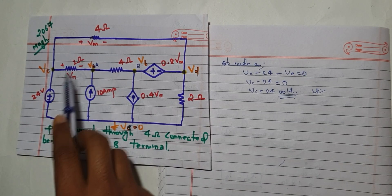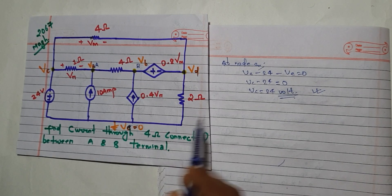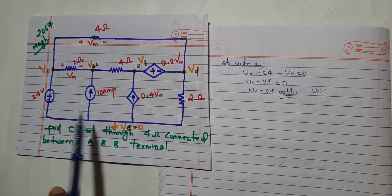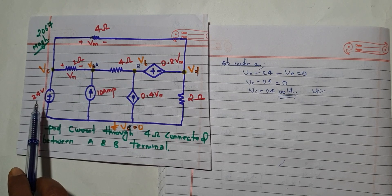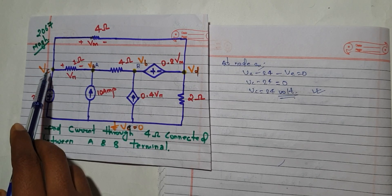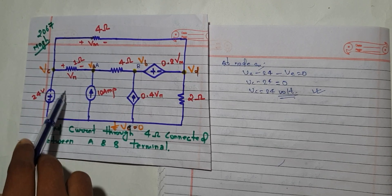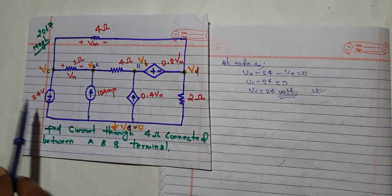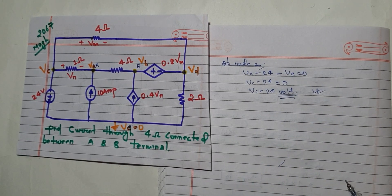When a voltage source is also present in a circuit and cannot be converted into a current source, it cannot be written simply in parallel with a resistor. Because of this, we cannot convert it. So we are directly going to write it in super node form — we must write it using a super node.